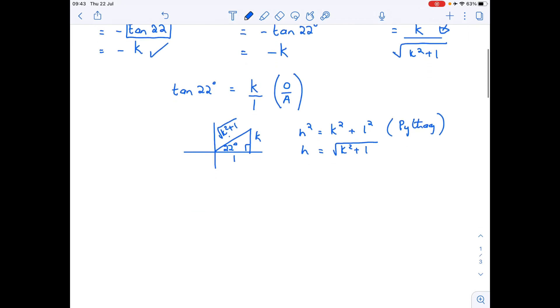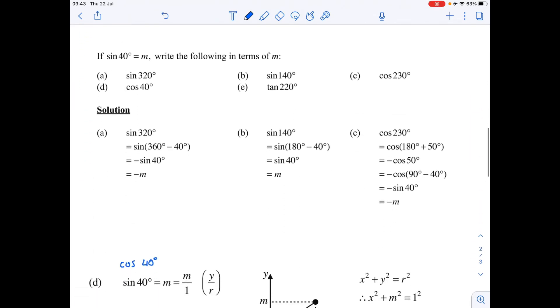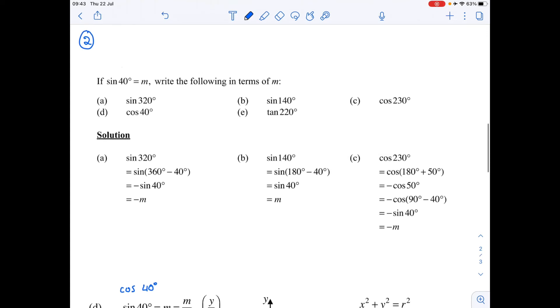Now let's have a look at one more example over here. Now in this one here, we've got sin of 40 equal to m. So that's what we've got. So we want everything back to 40. So if we look at the first one here, sin of 320 becomes minus sin of 40, which is minus m.